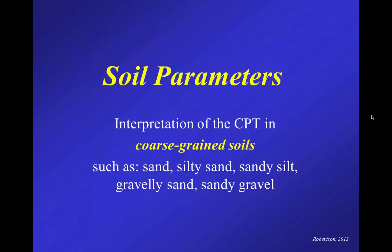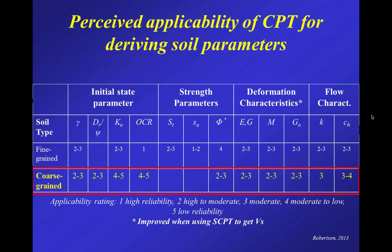We're going to look at interpretation of CPT in coarse-grained soils — typically sands, silty sands, sandy silts, gravelly sands, and sandy gravel. We have a table of the perceived application of CPT for deriving soil parameters, and I've highlighted the section on coarse-grained soils. Rating one is high, two is high to moderate, three is moderate, four is moderate to low, five is rather poor reliability. It's mostly twos and threes — moderate to high application — though not quite as good as fine-grained soils, where CPT was very good for OCR, undrained strength, and sensitivity.